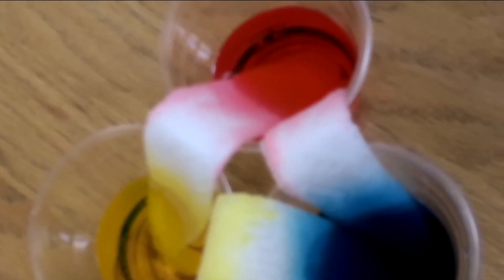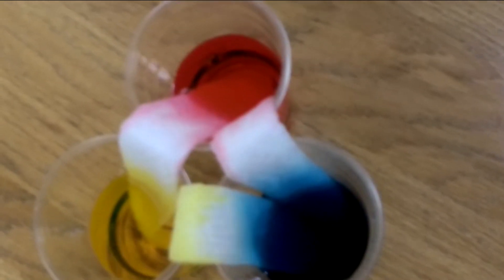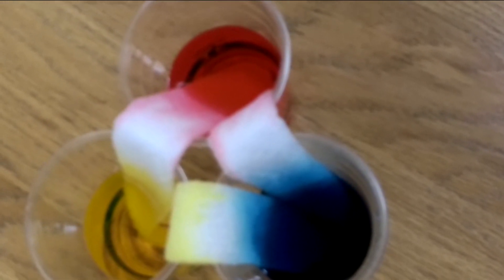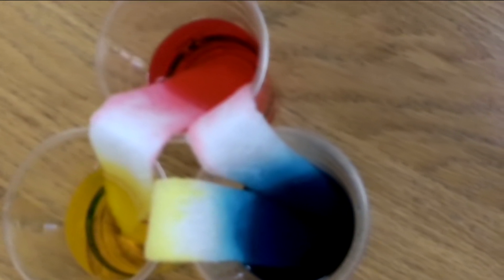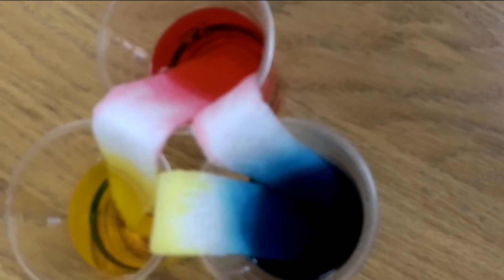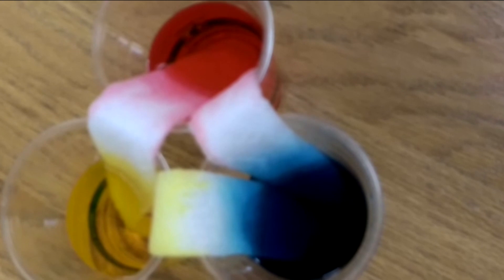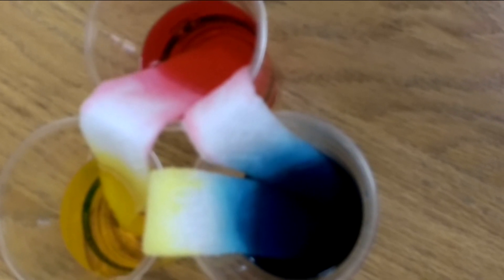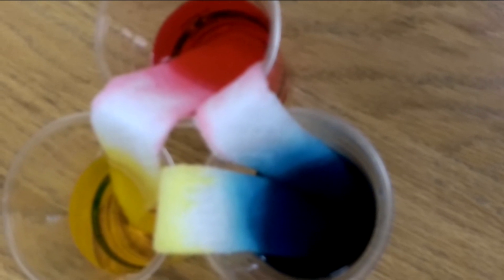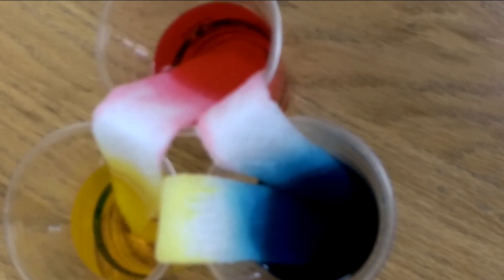We also have another model over here of another experiment we can do with three cups with three different colors mixed in. This one has been walking up to the center for about an hour to an hour and a half. When the paper towels get up at the top of the three cups, they are going to mix in and bleed together and make a kind of cool zigzag mix color.